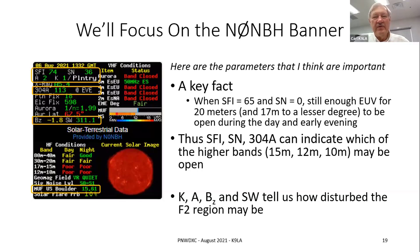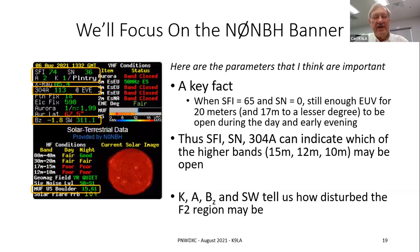We have to realize there's a key fact: when we're at solar minimum and the solar flux is about 65 — it bottoms out down at 65 — and when the sunspot number is zero, in other words the sun is blank, there's still enough extreme ultraviolet radiation for 20 meters to be open during the day and early evening. So that's a good baseline — how much above 65 for solar flux and how much above a sunspot number of zero will tell us which bands can be open. We'll look at a table of that kind of information in a little bit.